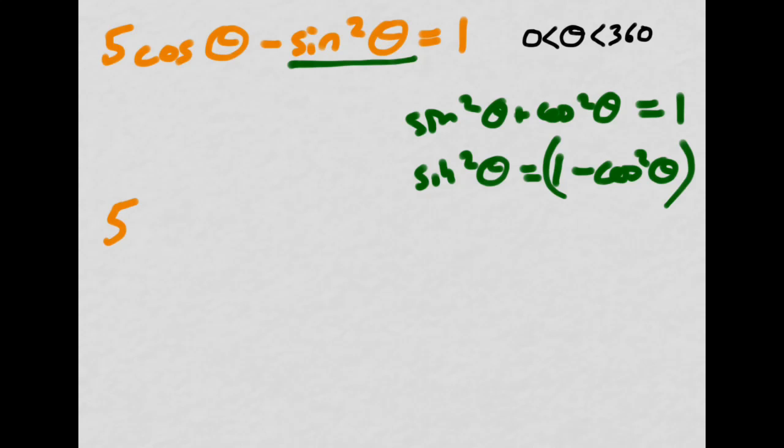Make sure you don't just write minus 1 minus cosine squared theta. Just think for a moment why that would be wrong. Pause it if you don't spot it instantly. Hopefully you've said, well, because I need to substitute that in for the whole of sine squared theta. And brackets are necessary. It changes what the equation is when I multiply it out.